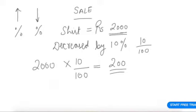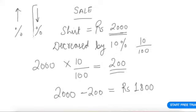So the price is decreased by Rs 200. If you were to buy this shirt, at what price would you buy? The original price was Rs 2000 minus Rs 200, so the new price is Rs 1800. So we discussed here about percentage decrease.